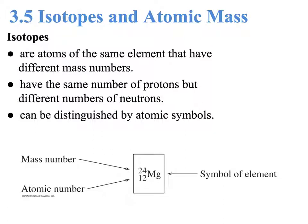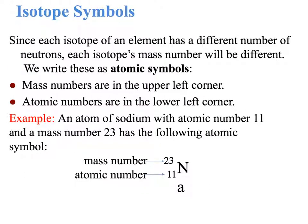Isotopes are atoms of the same element, but they have different mass numbers. Since we cannot change the number of protons in an atom, the only thing that we can change will be the number of neutrons. So isotopes are atoms that have the same number of protons but a different number of neutrons. In order to specify which isotope we're using, we write the mass number in the upper corner and the atomic number in the lower corner.